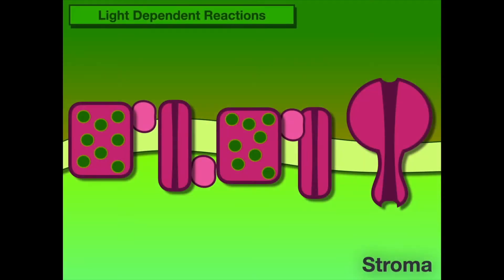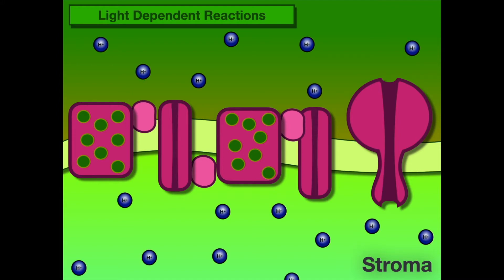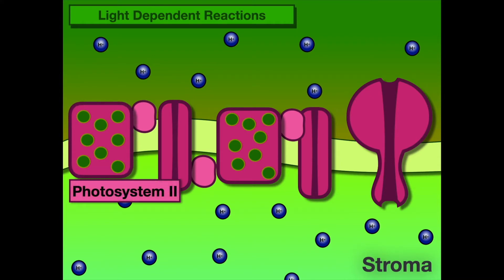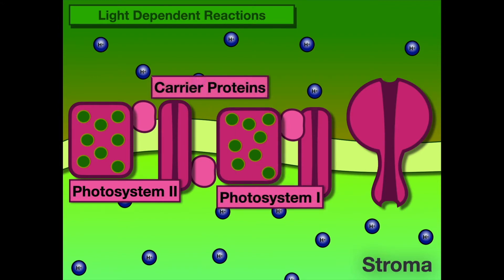We're going to look at the electron transport chain for the light-dependent reactions. There are a couple of key things to understand: we're going to have a hydrogen ion gradient and a couple of key proteins — Photosystem II, Photosystem I, carrier proteins associated with each, and ATP synthase. Our goal is to get ATP synthase to produce ATP.